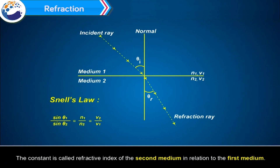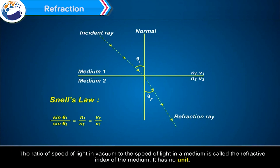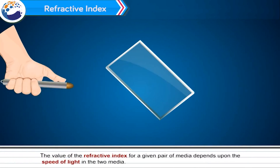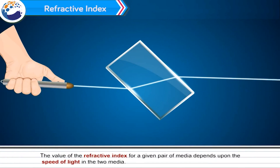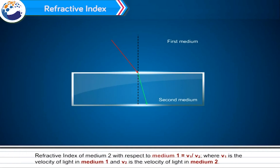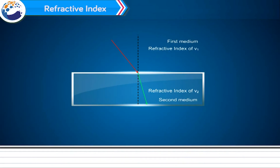The ratio of the speed of light in vacuum to the speed of light in a medium is called the refractive index of the medium. It has no unit. The refractive index of medium 2 with respect to medium 1 equals v1 divided by v2, where v1 is the velocity of light in medium 1 and v2 is the velocity of light in medium 2. Similarly, the refractive index of medium 1 with respect to medium 2 equals v2 divided by v1.